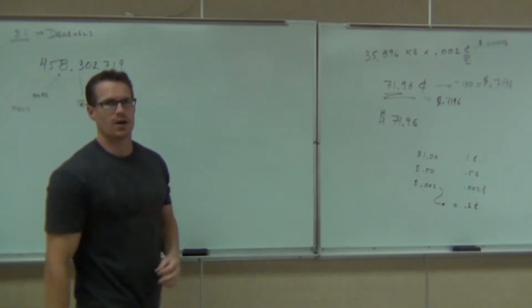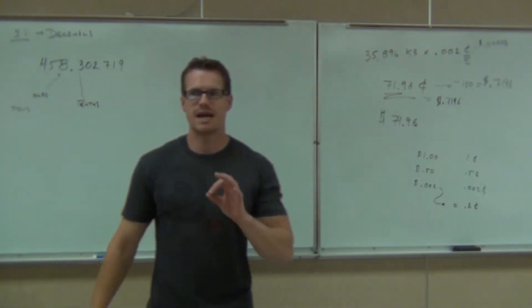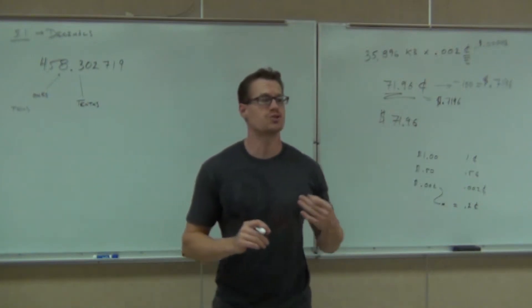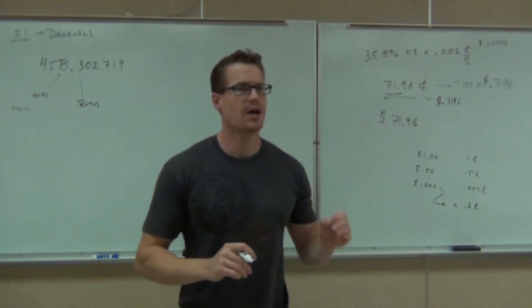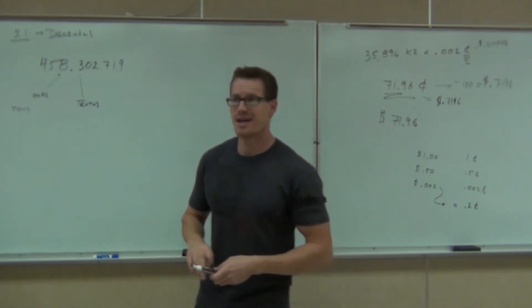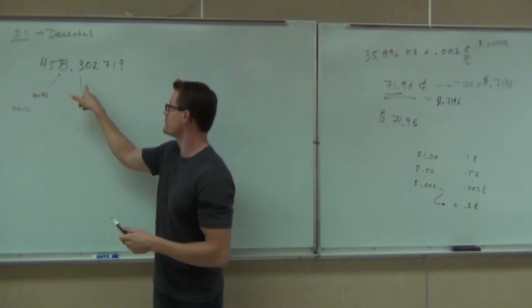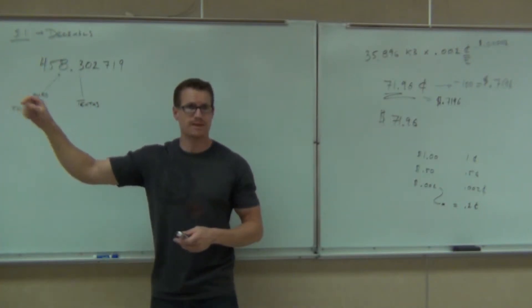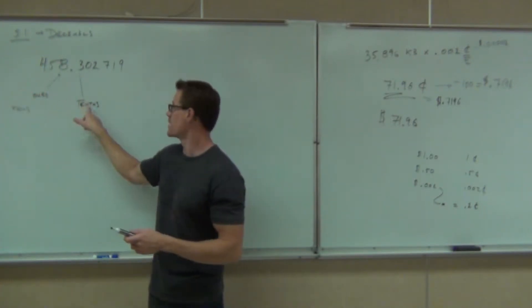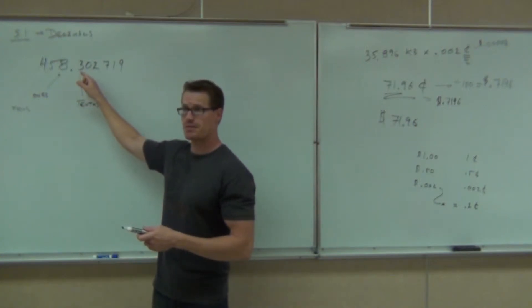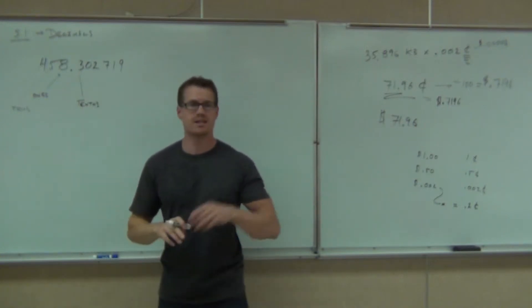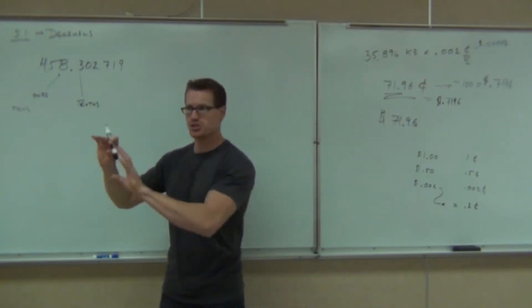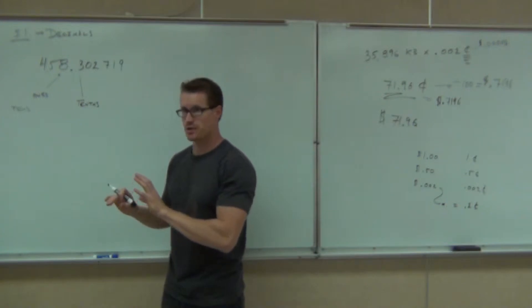Tenths. It all ends with -ths to the right of our decimal place, saying they are fractions of a dollar. Here's what tenths means: it takes ten of these to make up one whole. We have three tenths right here — we need seven more units to create a whole value, if we're just talking about the tenths.